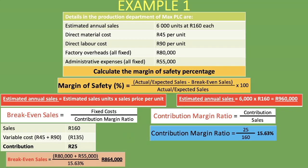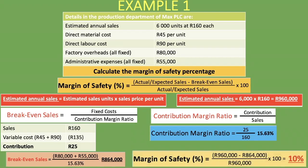Now we have all the figures to plug into our formula. We have the break-even sales and the estimated annual sales — which is the same as expected sales. So: 960,000 rand minus 864,000 rand, divided by 960,000 rand, multiplied by 100, gives us a margin of safety percentage of 10%.